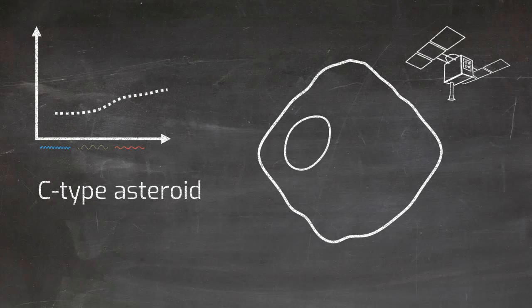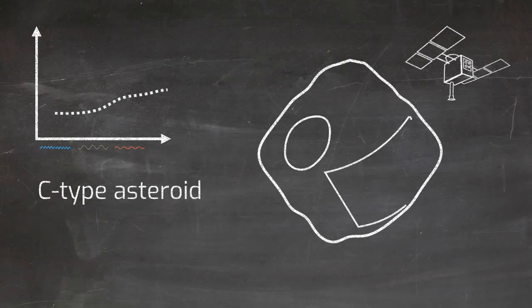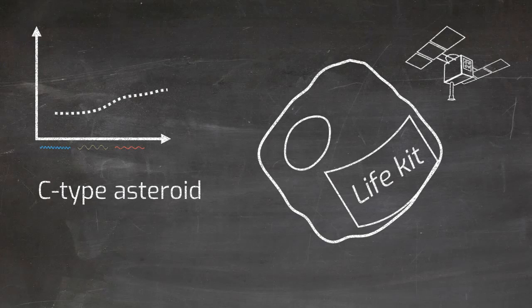C-type asteroids are thought to be rich in carbon molecules, such as organics, and minerals containing water. Both these ingredients are needed for life, which is why C-type asteroids may have helped bring habitability to our planet.